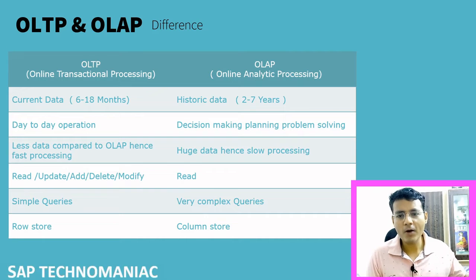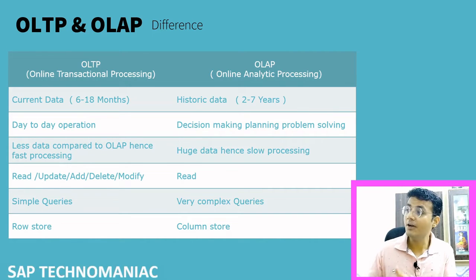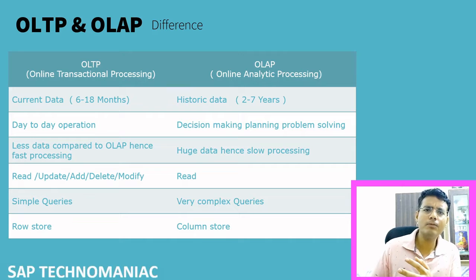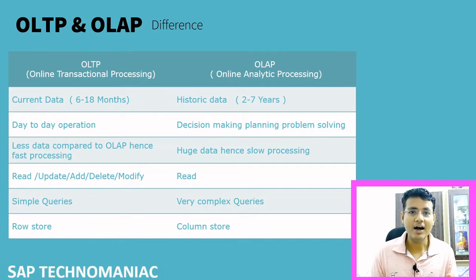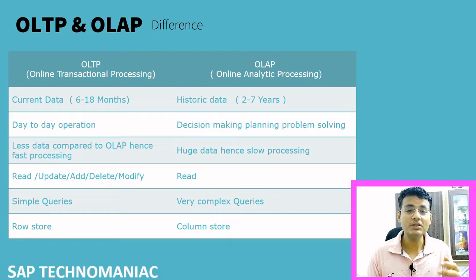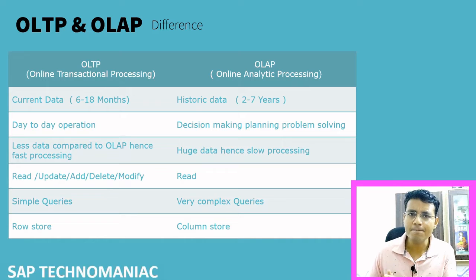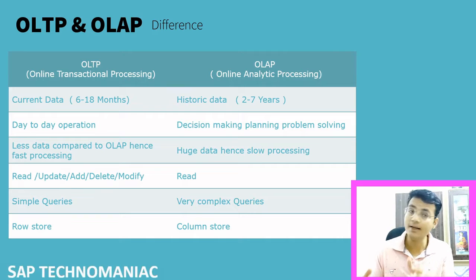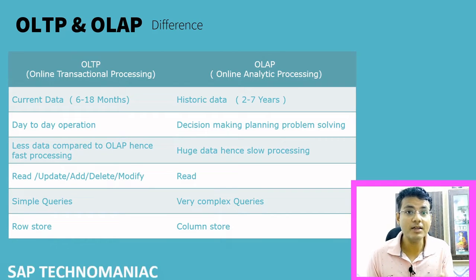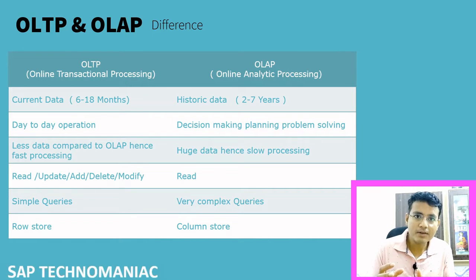In OLTP, we do day-to-day operations, and in OLAP, since we have historical data, we analyze that data and come up with some conclusion. For example, when a company is doing sales each month for a particular product and they want to know how much to produce each month, they will look at the historical data — 10 to 15 years — and see what the demand is in each month, how much they are selling to the customer. Based on that, they will take a decision and produce their goods and products.